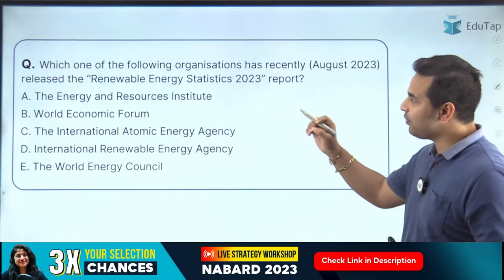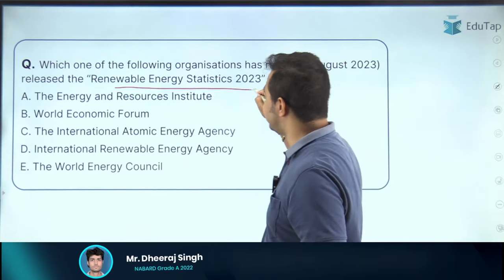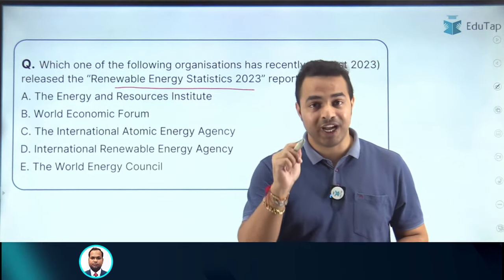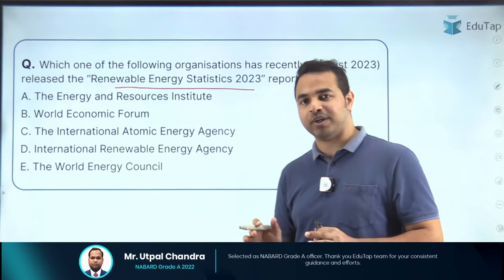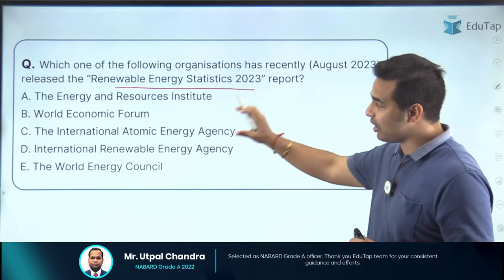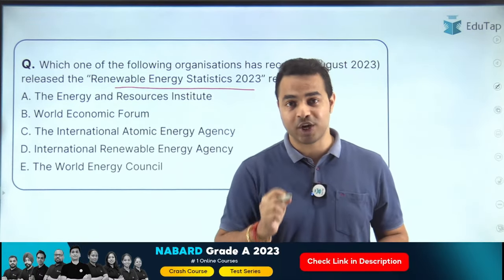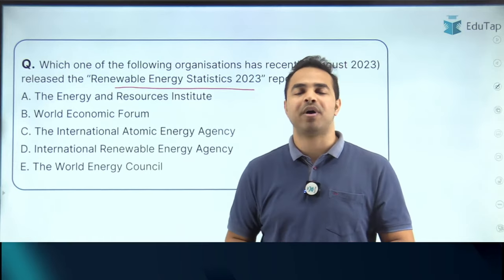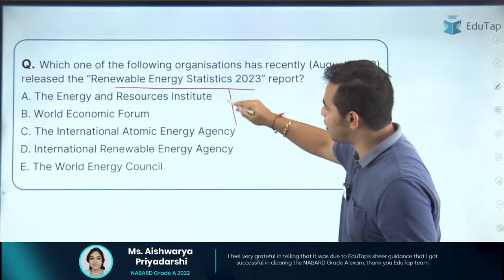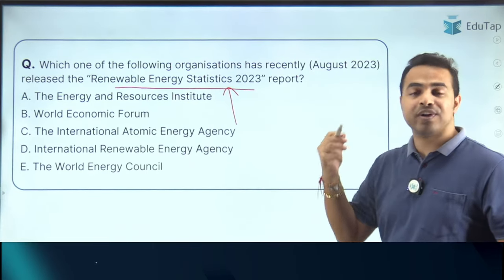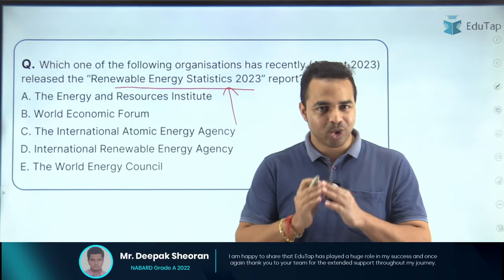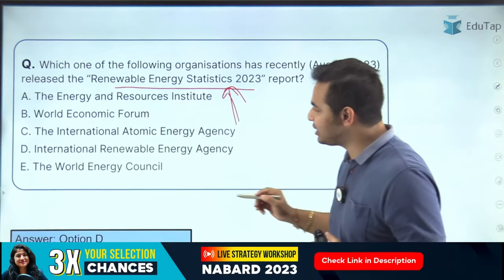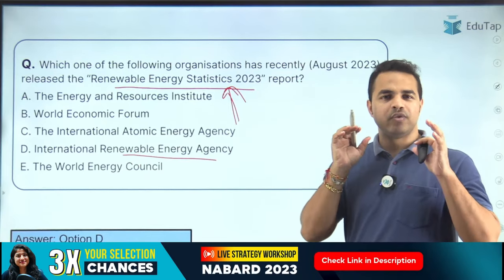The first question is on the Renewable Energy Statistics 2023 report. Please type your answers in the comment section so you can assess your level of preparation. This report has been released by the International Renewable Energy Agency (IRENA). It is easy to remember: an international organization dealing with renewable energy across the world would be the International Renewable Energy Agency.